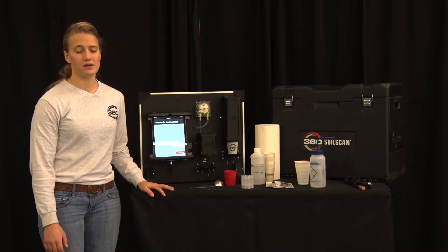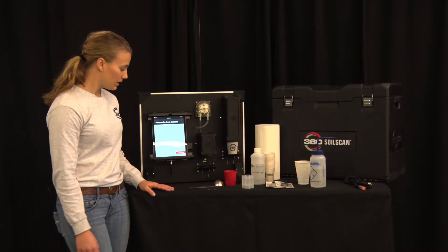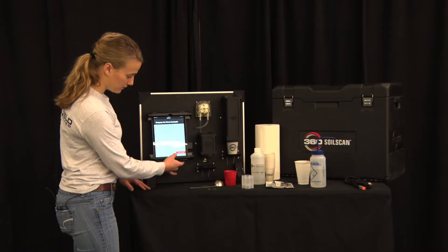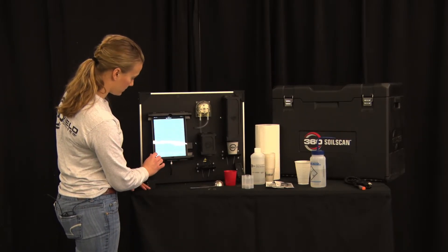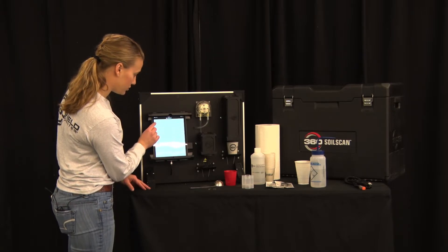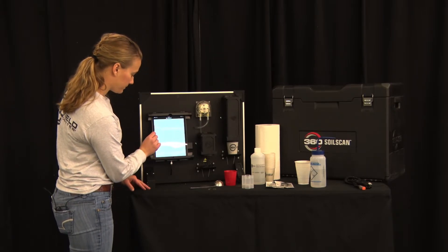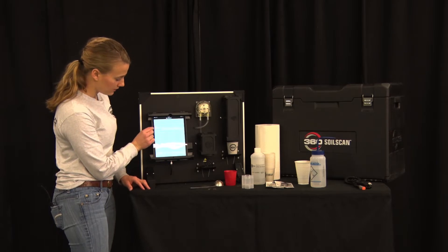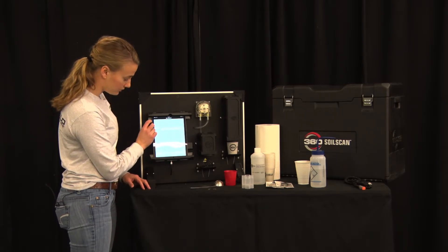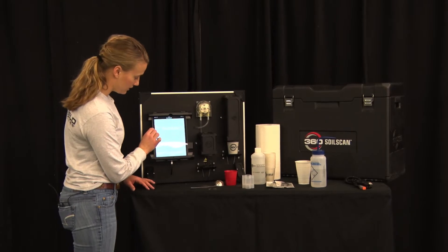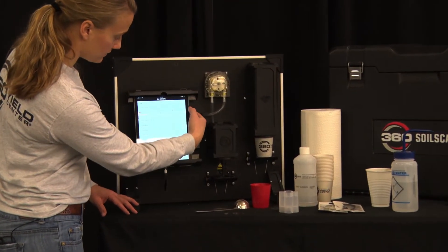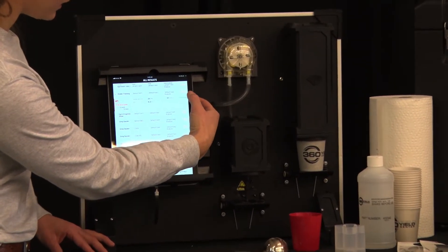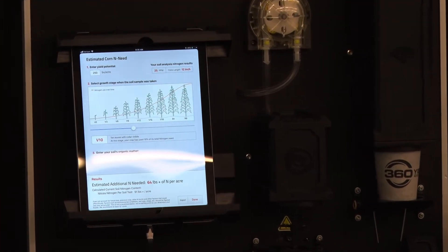If you did not calculate n needed at the time of taking the sample you can find that sample by going to all results and finding the farmer that you had saved it under. So here I had dealer training and sample number one. Every sample you take under the farmer for me it was dealer training would be under this tab here and then you can simply select calculate n needed and you'll be taken to the same page.